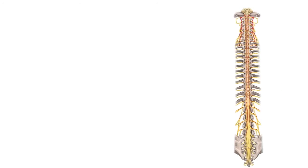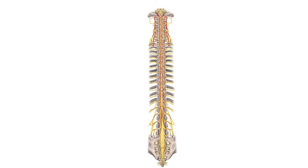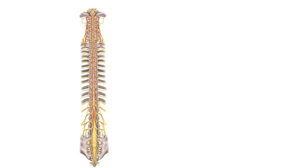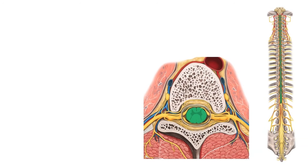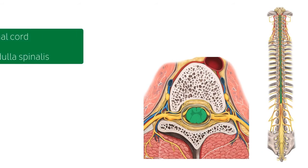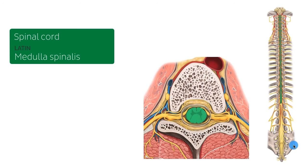Before we begin describing the spinal membranes, nerve roots and all the other structures that we are going to look at in this tutorial, I just want to give a brief general description of the spinal cord. The spinal cord and the brain together make up the central nervous system. The spinal cord extends from the foramen magnum all the way down to the first or second lumbar vertebra, and it's enclosed in the vertebral column.